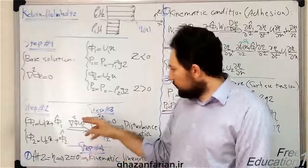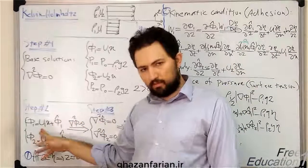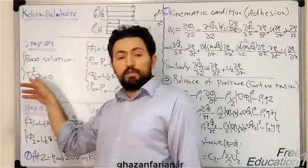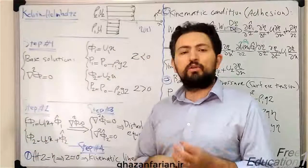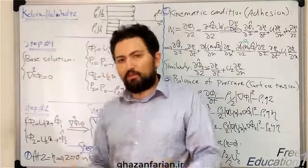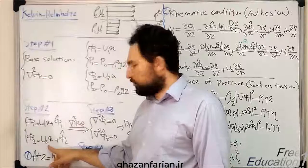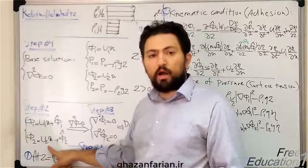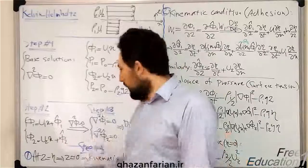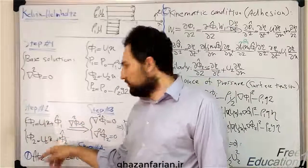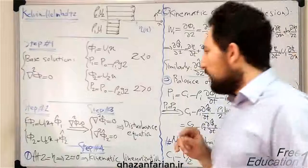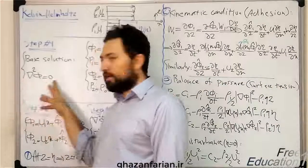The second step is to add a disturbance to the base solution. Phi-hat is the disturbance of the potential function, so phi-1 is the new solution of the governing equation — the Laplace equation — which is the disturbed solution. U-1x and U-2x are the base or undisturbed solutions, while phi-hat 1 and phi-hat 2 are the disturbances added to find the disturbed solutions, which should satisfy the governing equation.